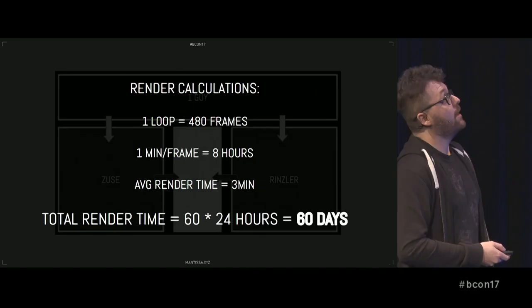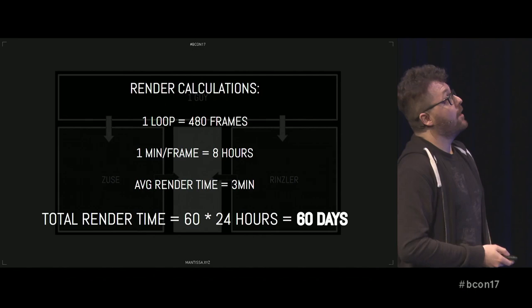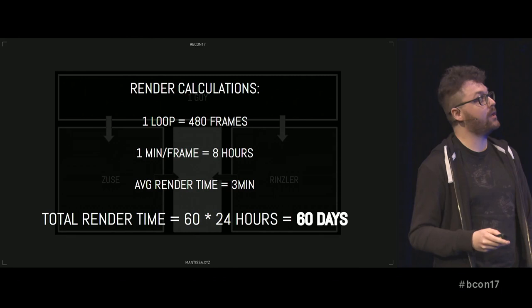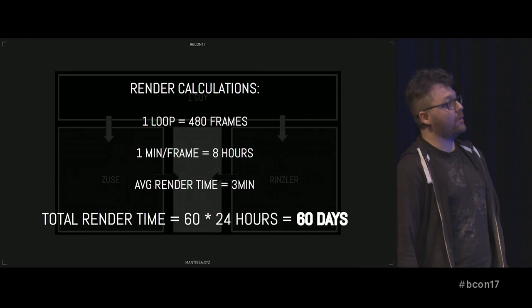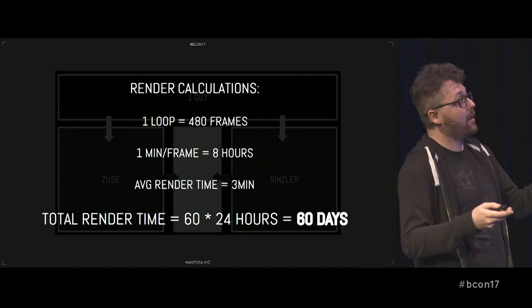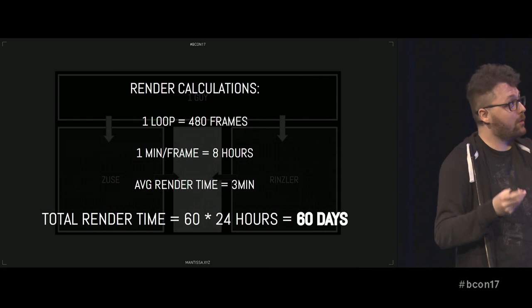One loop is 480 frames. If I render at one minute a frame, it takes about eight hours to render one loop. But the average was not one minute — it was more like three minutes, and towards the end maybe peaking towards four minutes. So the total render time, just on the main workstation with three GPUs, would be 60 full 24-hour days of actual rendering. I used the second machine a little bit too, so it probably got cut down to about 45 to 50 days. Two full months of 24-hour-a-day rendering got taken out of those four months just to render.